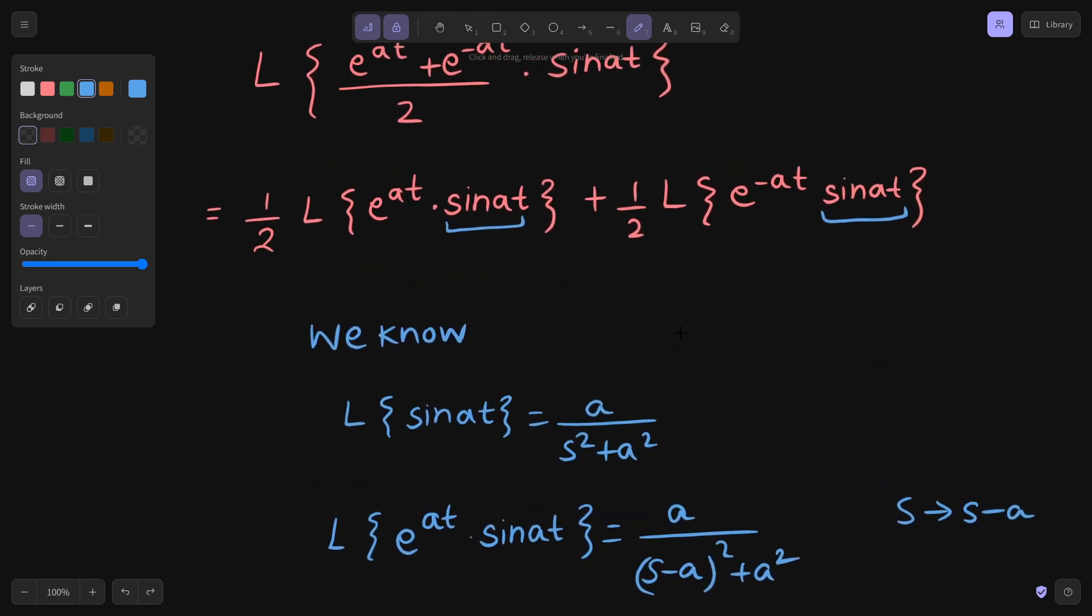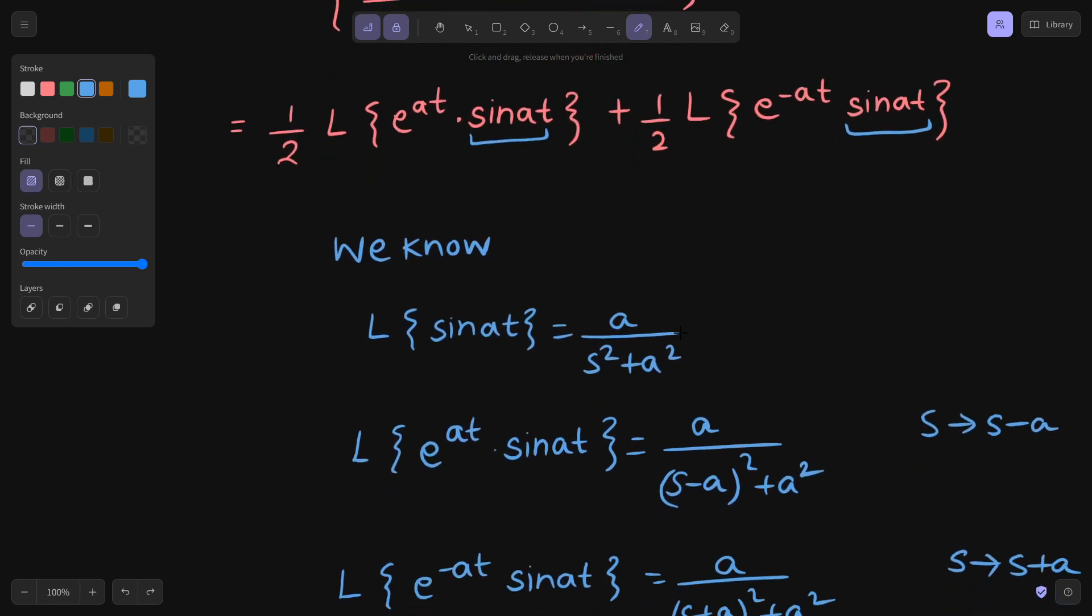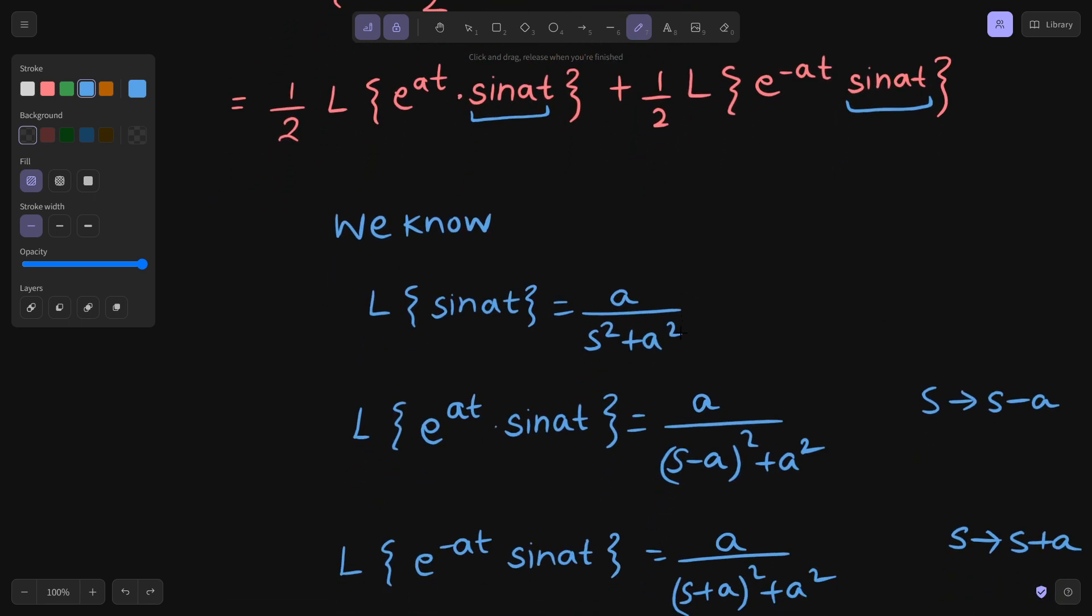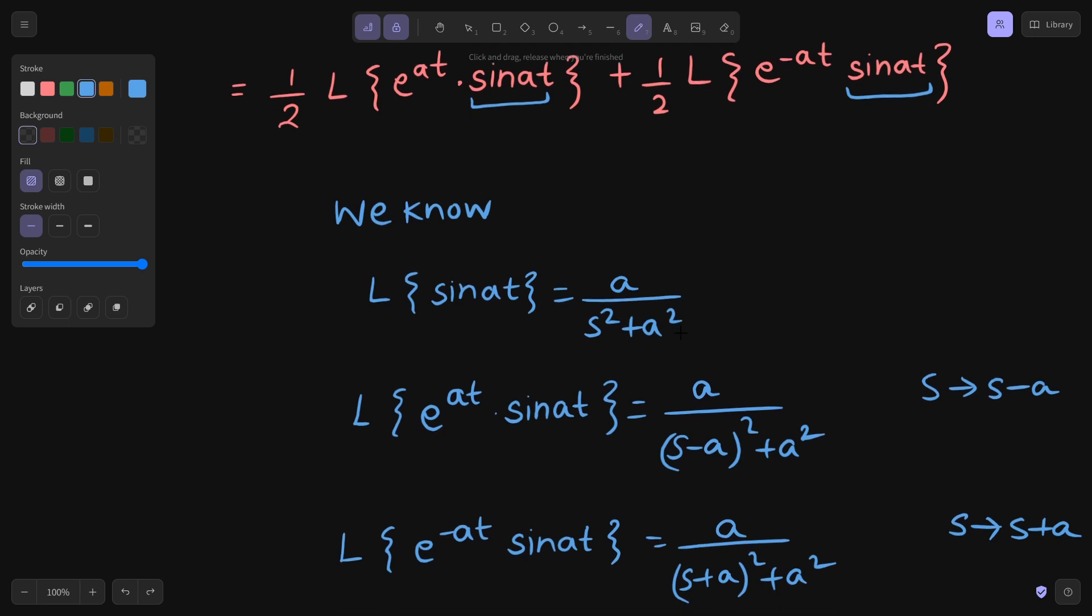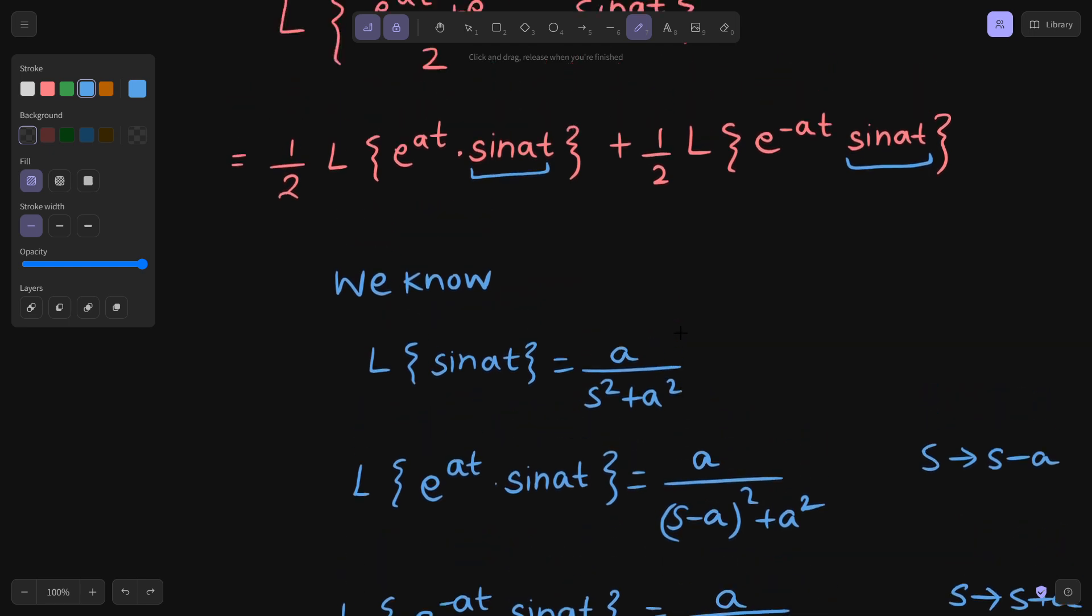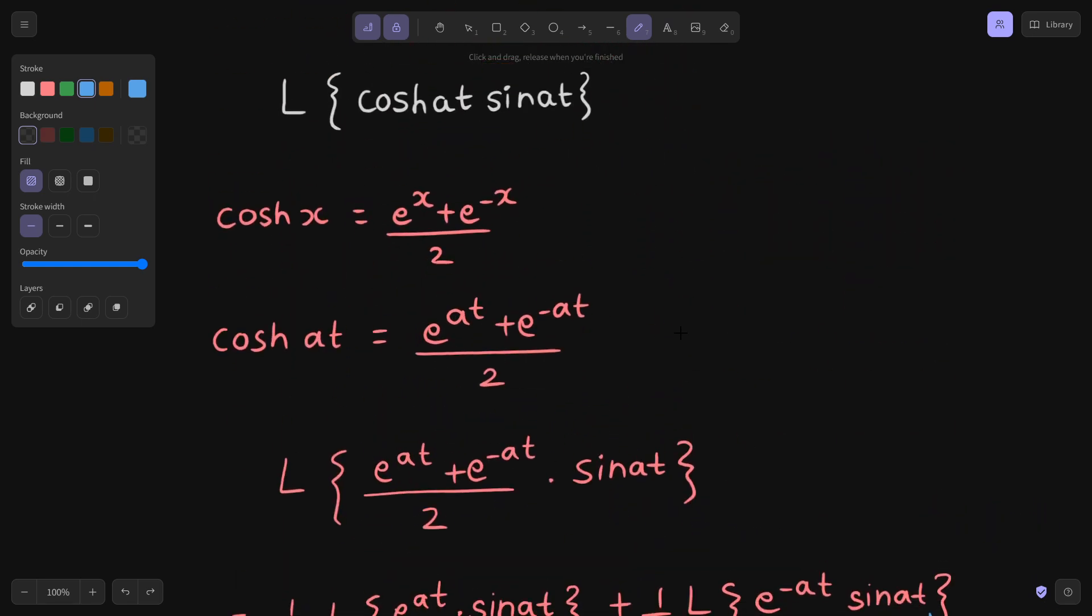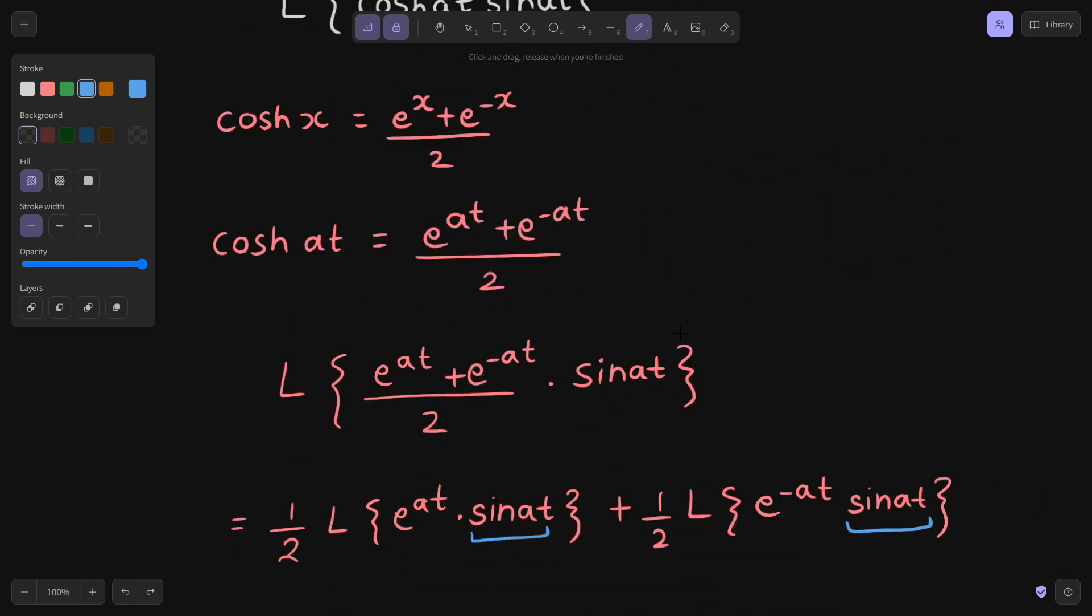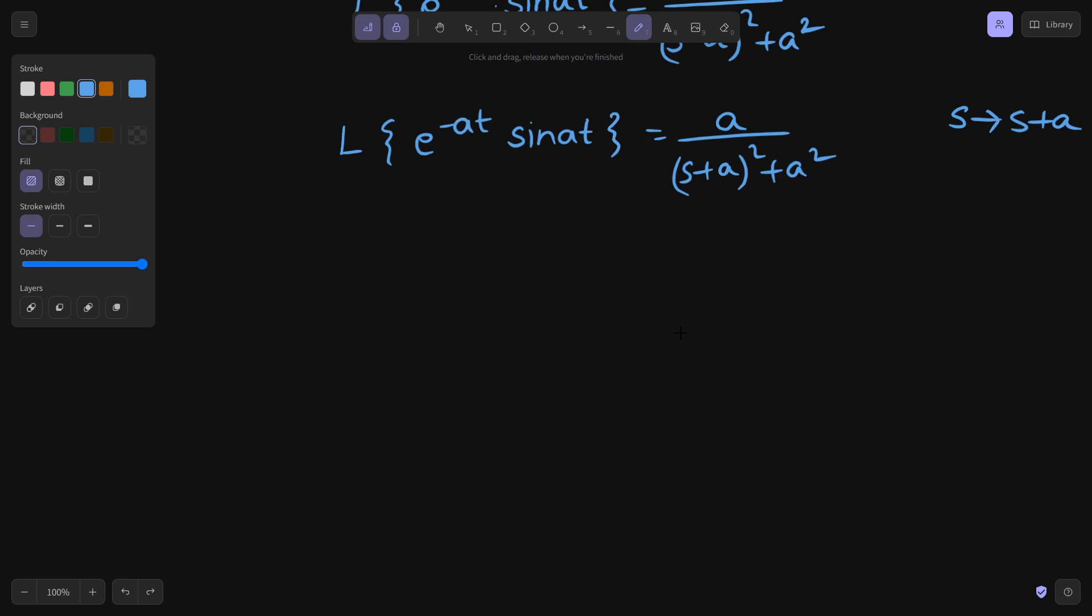Now let's put these values back into our pink equation or whatever color is that. So if you put that back into that equation, we were solving Laplace of cosh at sin at.